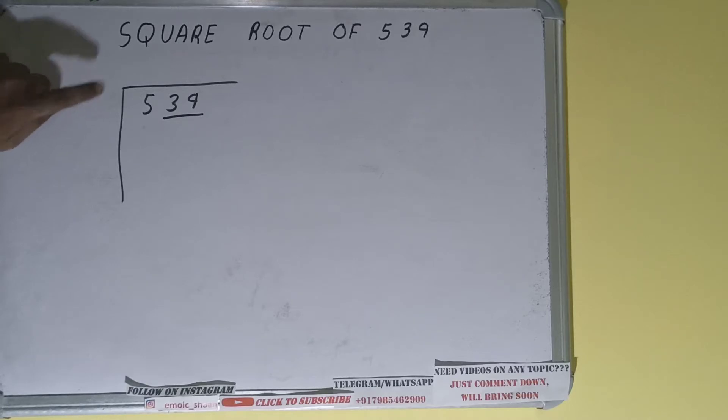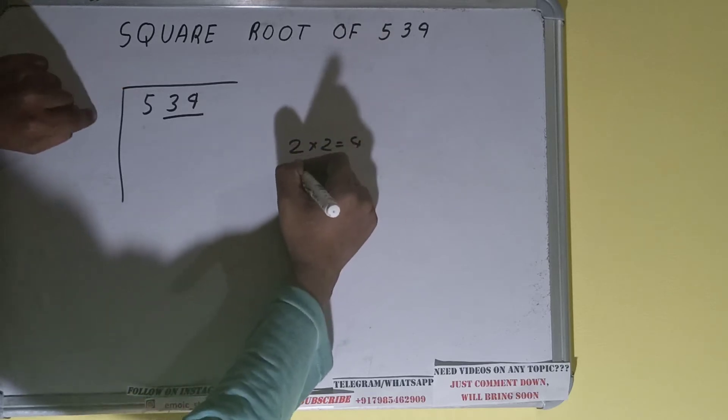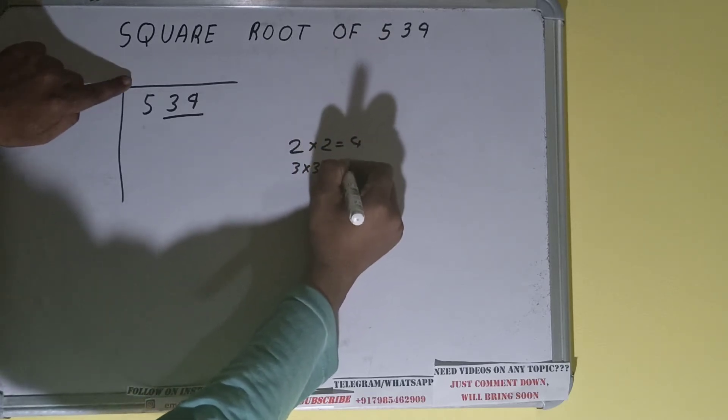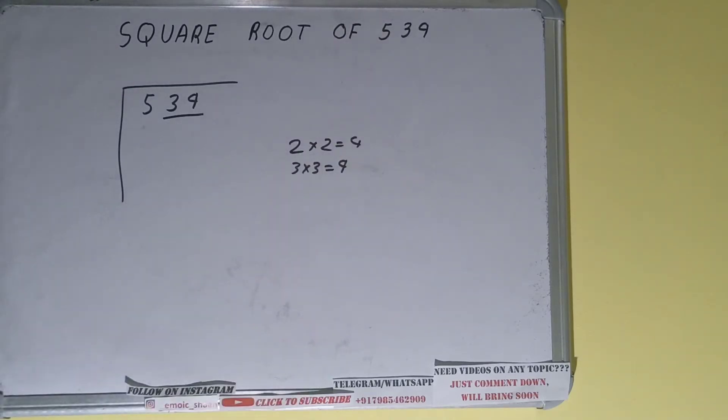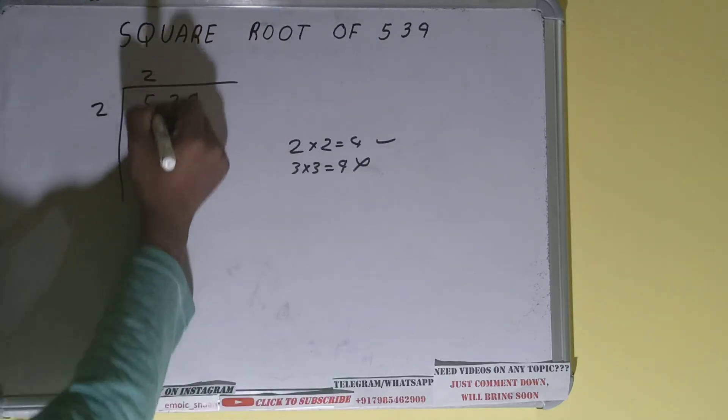...is whatever number we write here we have to write here also. So if we write two here and two here it will be four. If we write three here and three here it will be nine. Nine we cannot use because it is greater than five, so we have to use this four. So two here and two here...